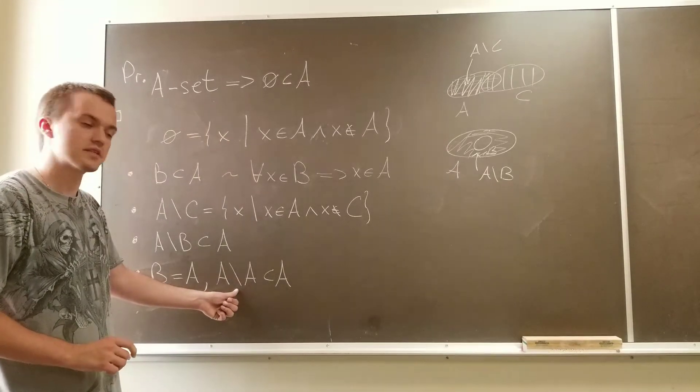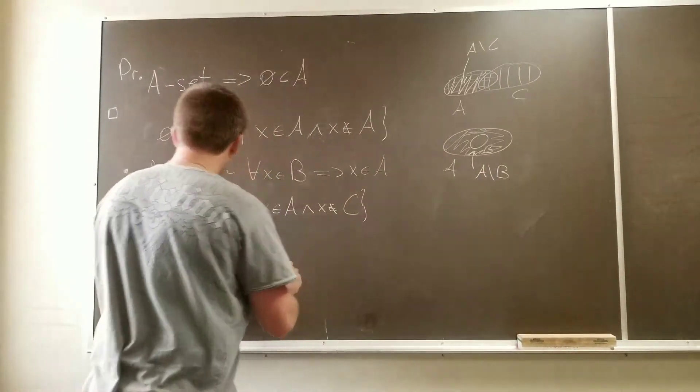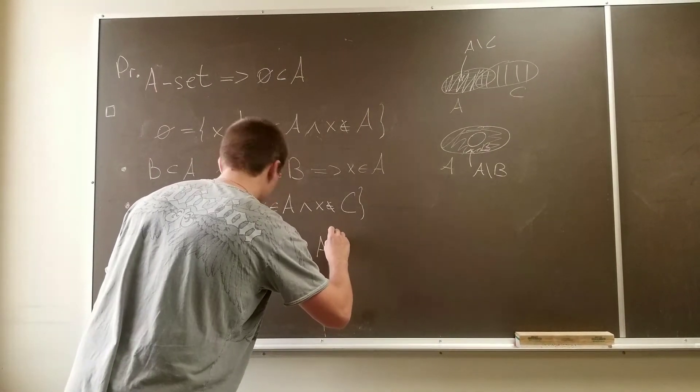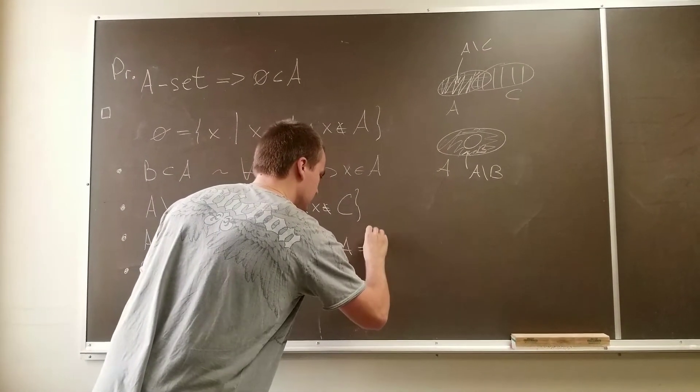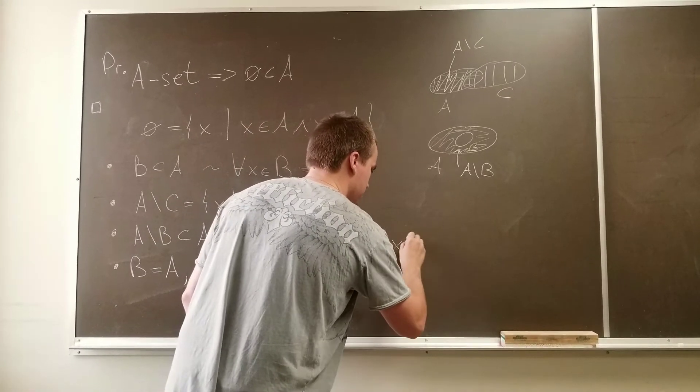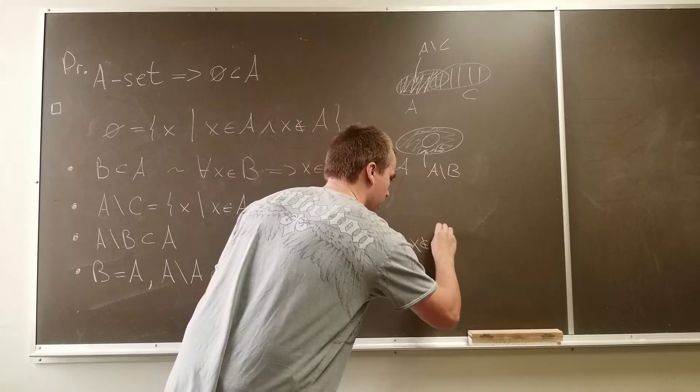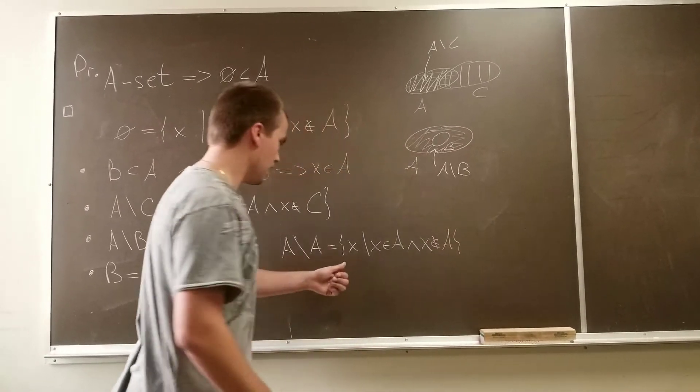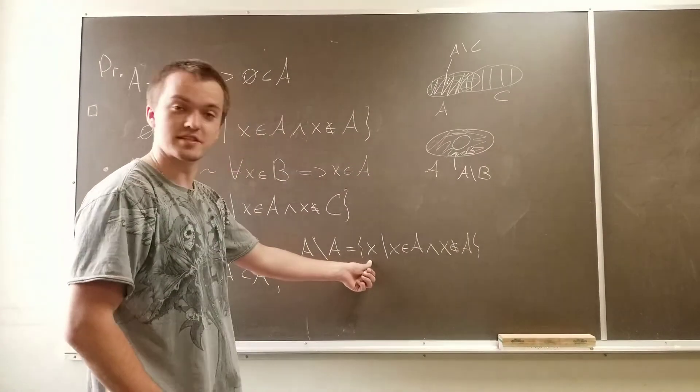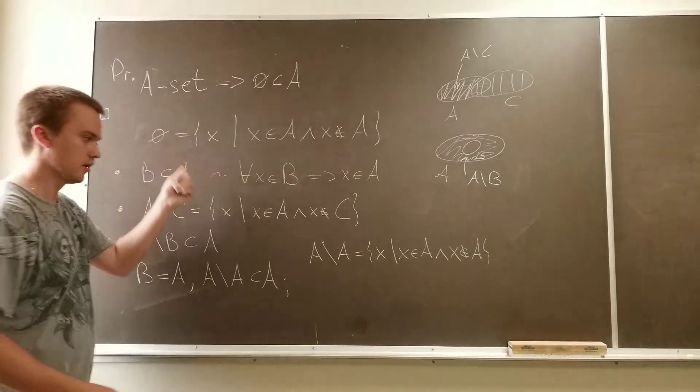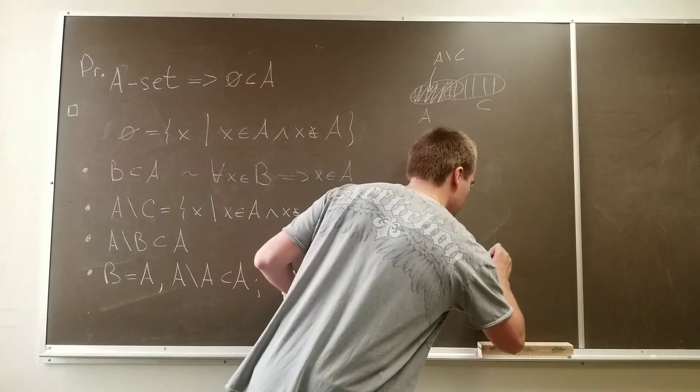And what is A minus A? According to this definition, A minus A are such elements X that X belongs to A and X doesn't belong to A. And if we're going to take B of A, it's exactly the definition, so A minus A is an empty set.